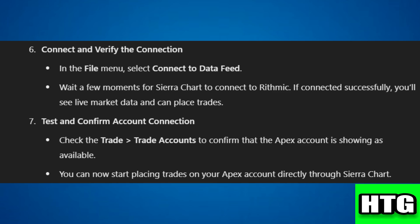Step seven: test and confirm account connection. Go to Trade and then Trade Accounts to check if the Apex account is available, then start placing trades through Sierra Chart. That's how you can connect Apex to Sierra Chart — that's all for this video.